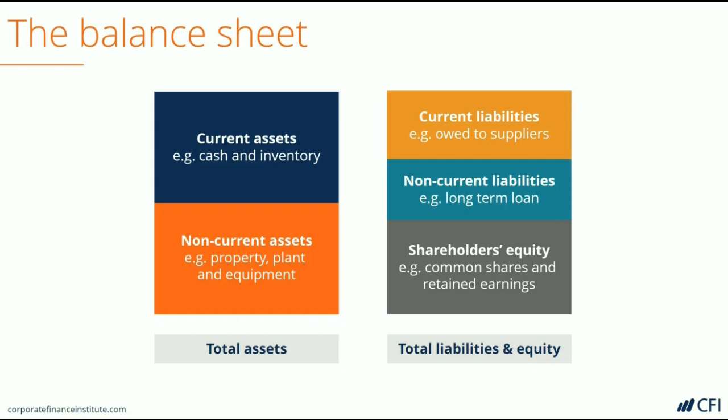If losses are generated, those also reduce the retained earnings account. So retained earnings is essentially a running total that shows how much profit the company has generated, less any losses, and less any dividends that have been paid out. At the end of the day, the total shareholders' equity value must be equal to the total assets minus the total liabilities.